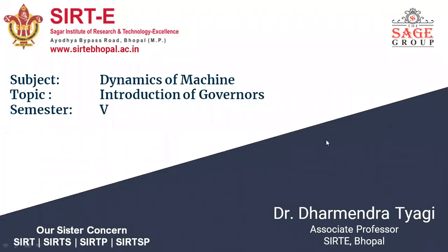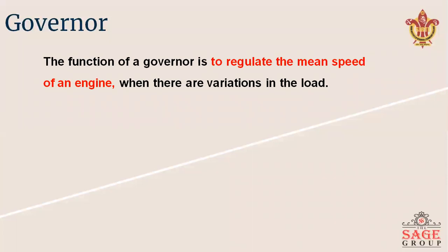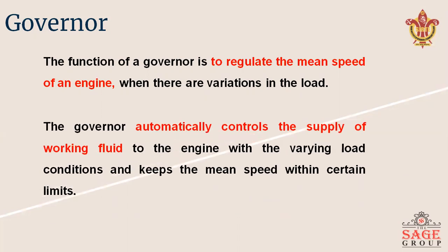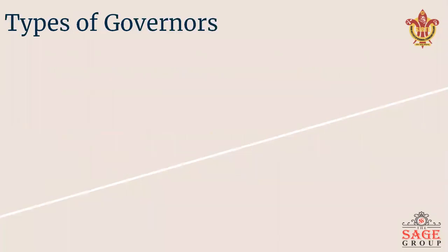Hello dear students, today we are going to discuss about the governor — basically the function of governance and classification of governors and the centrifugal governor. The function of a governor is to regulate the mean speed of an engine when there are variations in the load. The governor automatically controls the supply of working fluid to the engine with varying load conditions and keeps the mean speed within a certain limit. There are different types of governors.